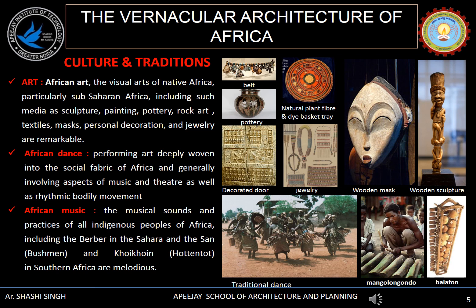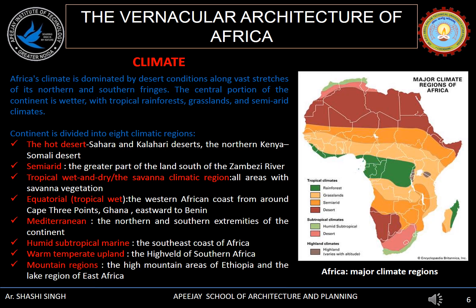African dance involves music, theatre and rhythmic bodily movement, which reflects the social fabric of Africa. Various musical instruments are used during performances, celebrations or on certain occasions. The climate of Africa is dominated by desert conditions, mainly in northern and southern regions, having a wetter or semi-arid central portion. The continent is majorly divided into eight climatic regions: hot desert, semi-arid, tropical wet and dry, equatorial, Mediterranean, humid subtropical, warm temperate and mountain regions or highlands.